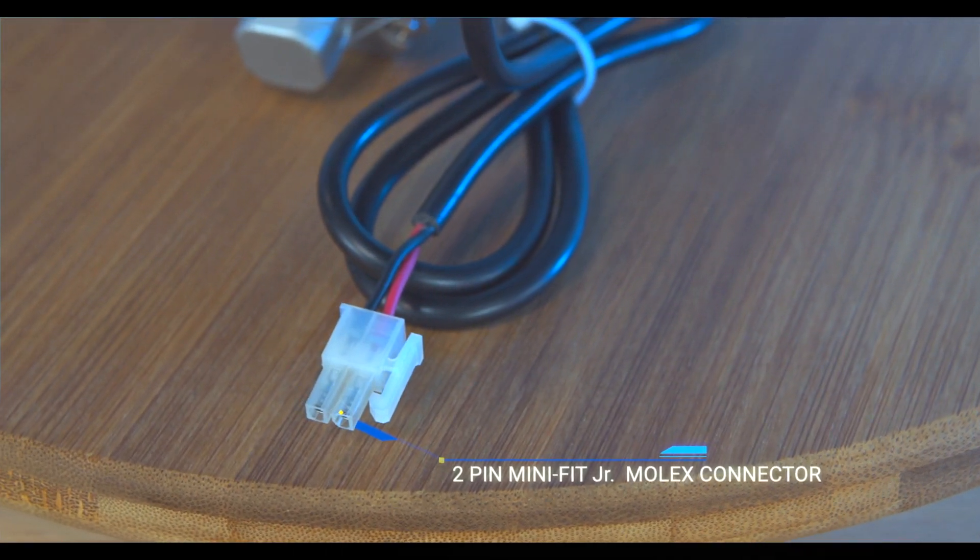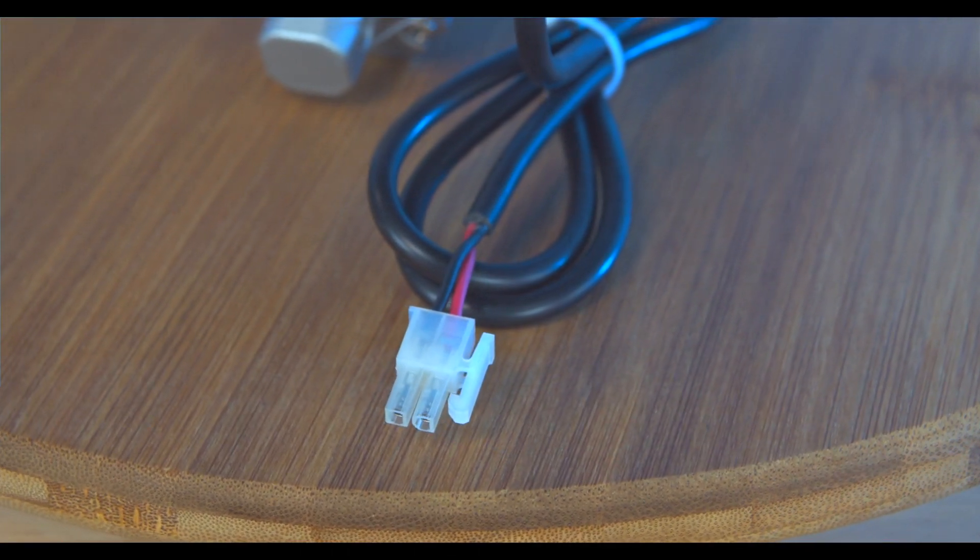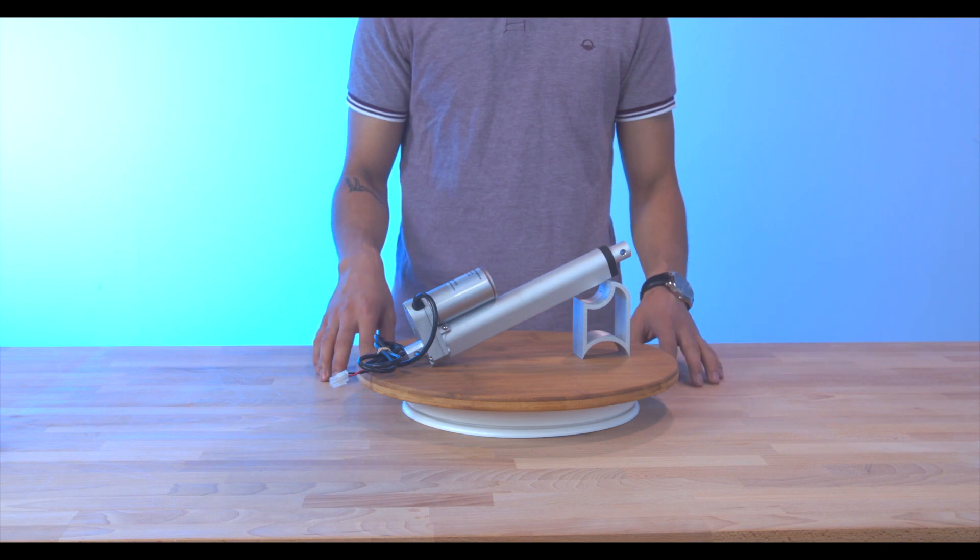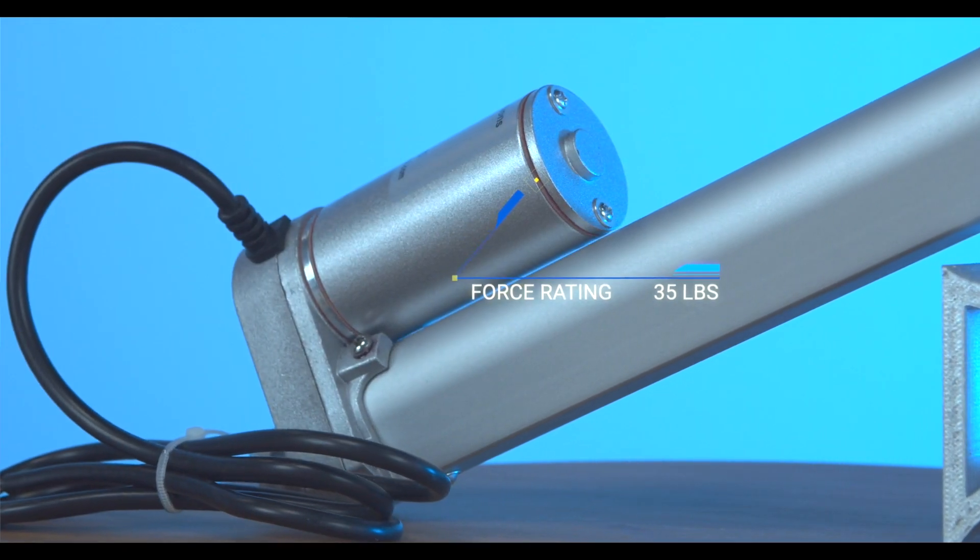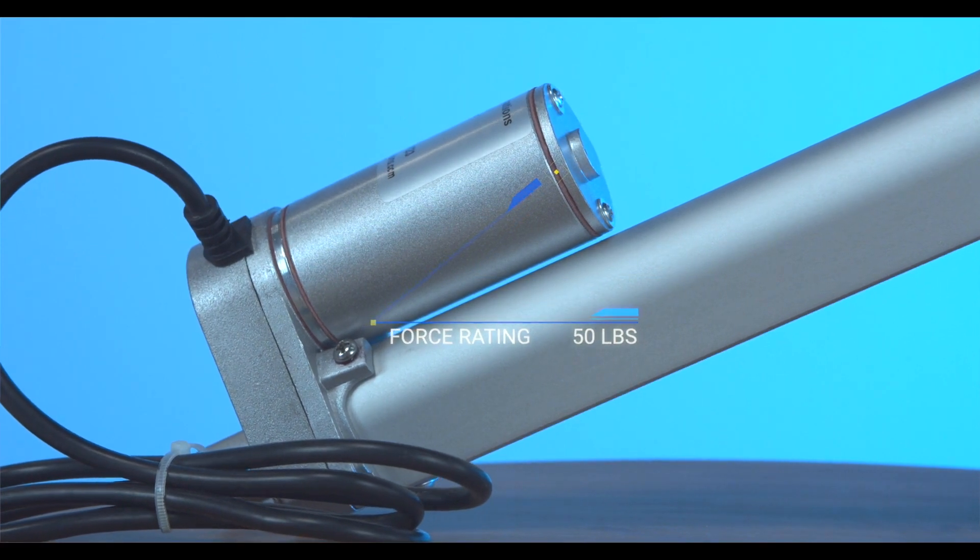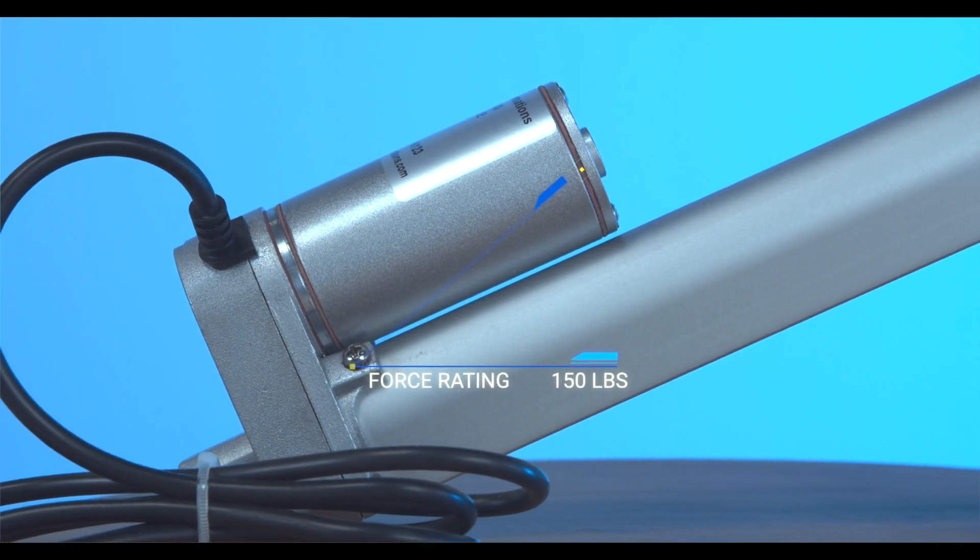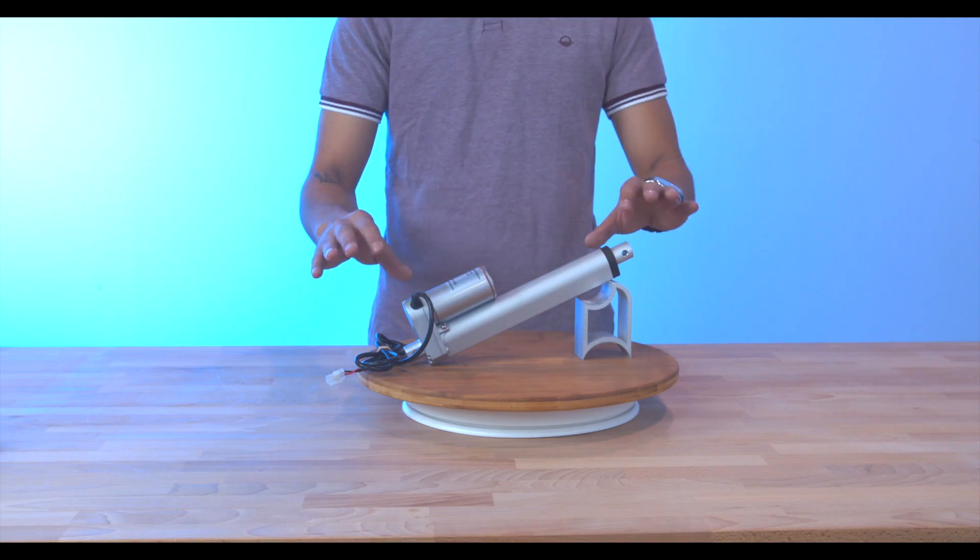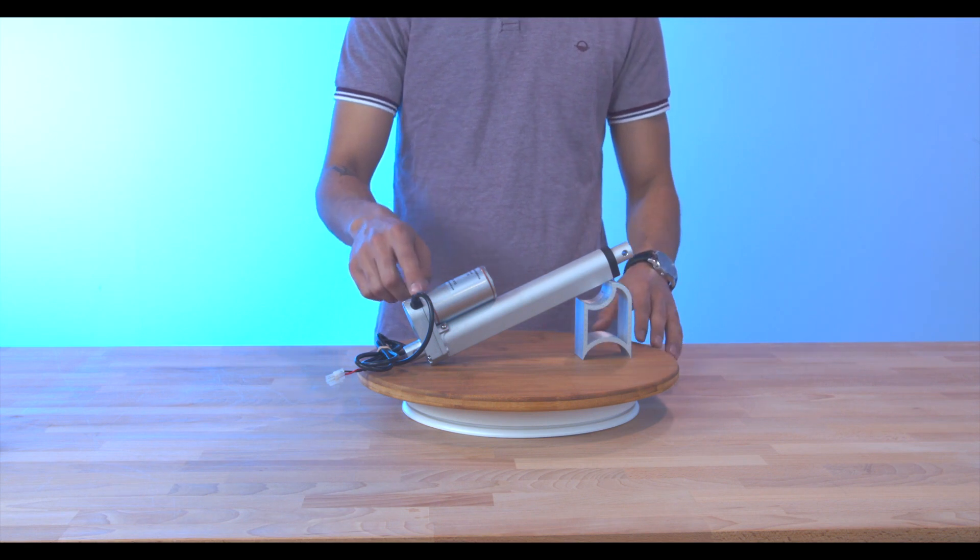The PA14 comes in three different force ratings: 35 pounds, 50 pounds, and 150 pounds. All of these force ratings will have a draw up to 5 amps at full load. Everything will be the same in terms of body size and housing.